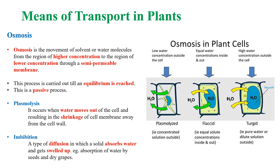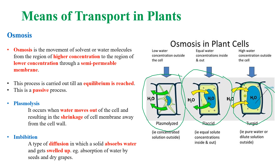Osmosis in plant cells is well explained by the following figures. This figure illustrates the process of plasmolysis — when there is low water concentration outside the cell, the water from the cell moves out, resulting in the shrinkage of the membrane. This shows a flaxseed cell when there is equal water concentration inside and outside. This figure illustrates the process of imbibition, when there is higher water concentration outside the cell and water moves inside the cell, making the cell turgid.